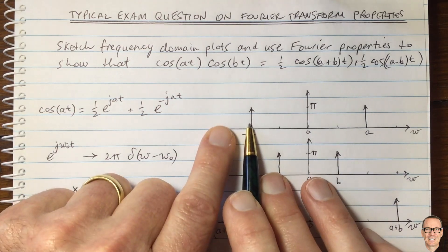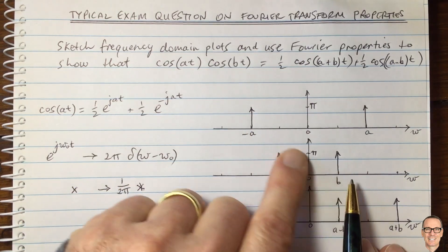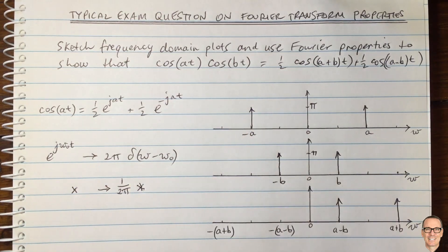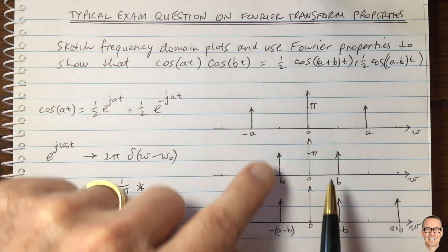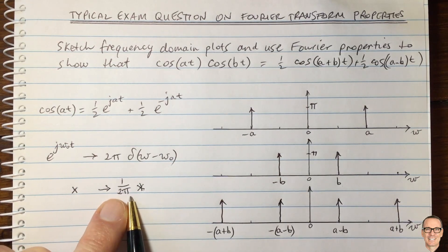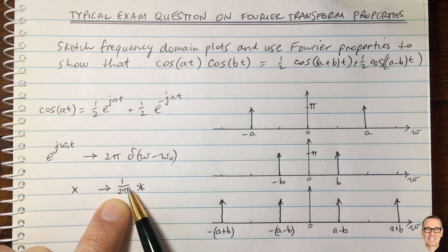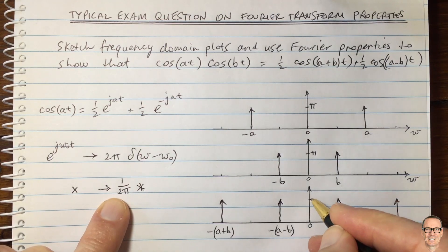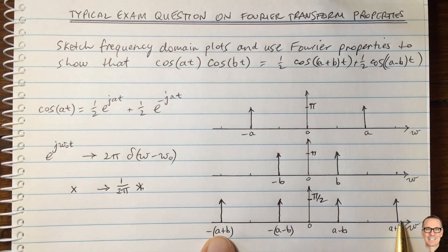When we convolve with the delta at −b, this function is centered there, giving delta functions shifted to −a+b and −a−b. For the amplitudes: the convolution multiplies the heights, giving π², and then we divide by 2π from the scaling factor, so the height of each resulting delta function is π/2.